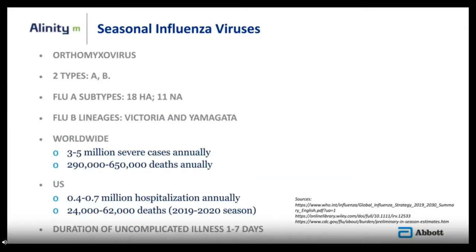Influenza virus is a predominant contributor to seasonal respiratory infection. It is an orthomyxovirus with two main types that infect humans: A and B. There are many subtypes for flu A and two main lineages for flu B. Worldwide, influenza viruses cause 3 to 5 million severe cases every year and between 290,000 to 650,000 deaths. In the United States, these viruses lead to 0.4 to 0.7 million hospitalizations and 24,000 to 62,000 deaths in the 2019–2020 season. Duration of uncomplicated illness is 1 to 7 days.